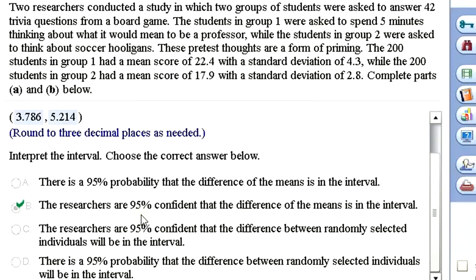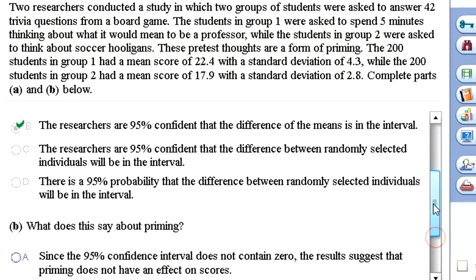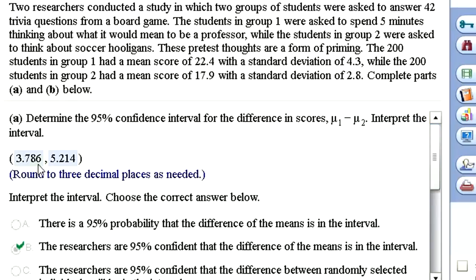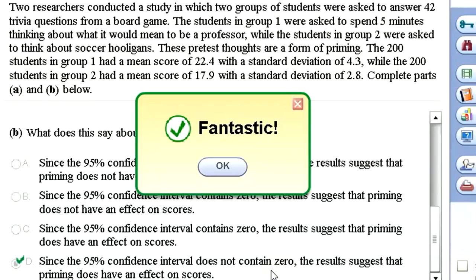Since we're doing an estimate on the difference of means, that's what we're confident about. Now, what does it say about priming? Since we're 95% confident that the difference is between 3.7 and 5.21, that's another way of saying we're 95% confident that mu1 is greater than mu2. And if mu1 is greater than mu2, that suggests that priming works. Since the 95% confidence interval does not contain zero, it actually suggests priming does have an effect on the scores. If the interval contained zero, we couldn't rule out the possibility that this was just from random chance from the sampling. But the confidence interval is only in the positive side. So we were 95% confident that priming actually works.